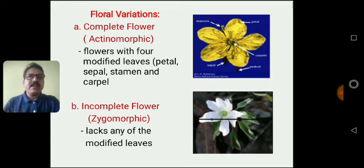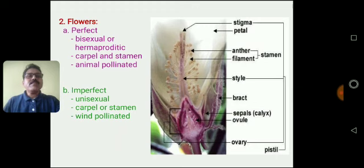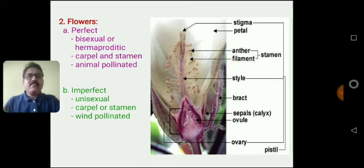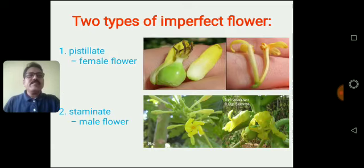There are two kinds of flowers based on reproductive structures. The presence of both reproductive structures in the flower is called a bisexual flower. If one of the reproductive structures is absent, it is called a unisexual flower. The two imperfect flowers are also called Pistillate flower, which is the female flower, and Staminate flower, which is the male flower.